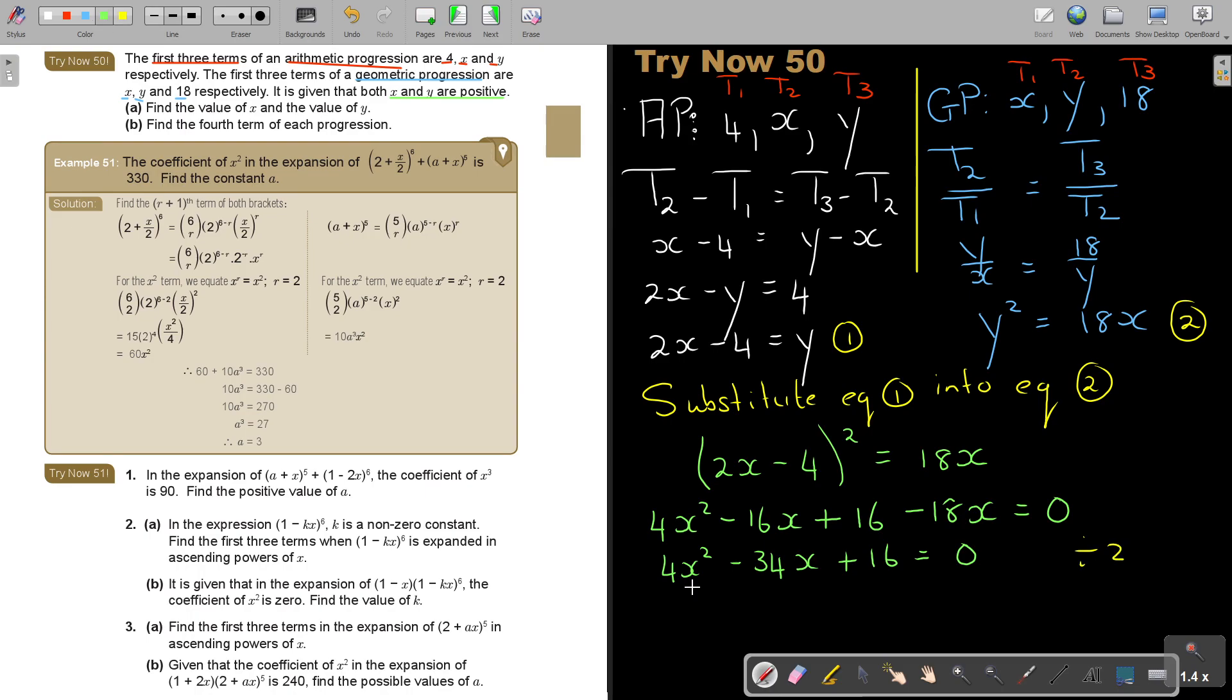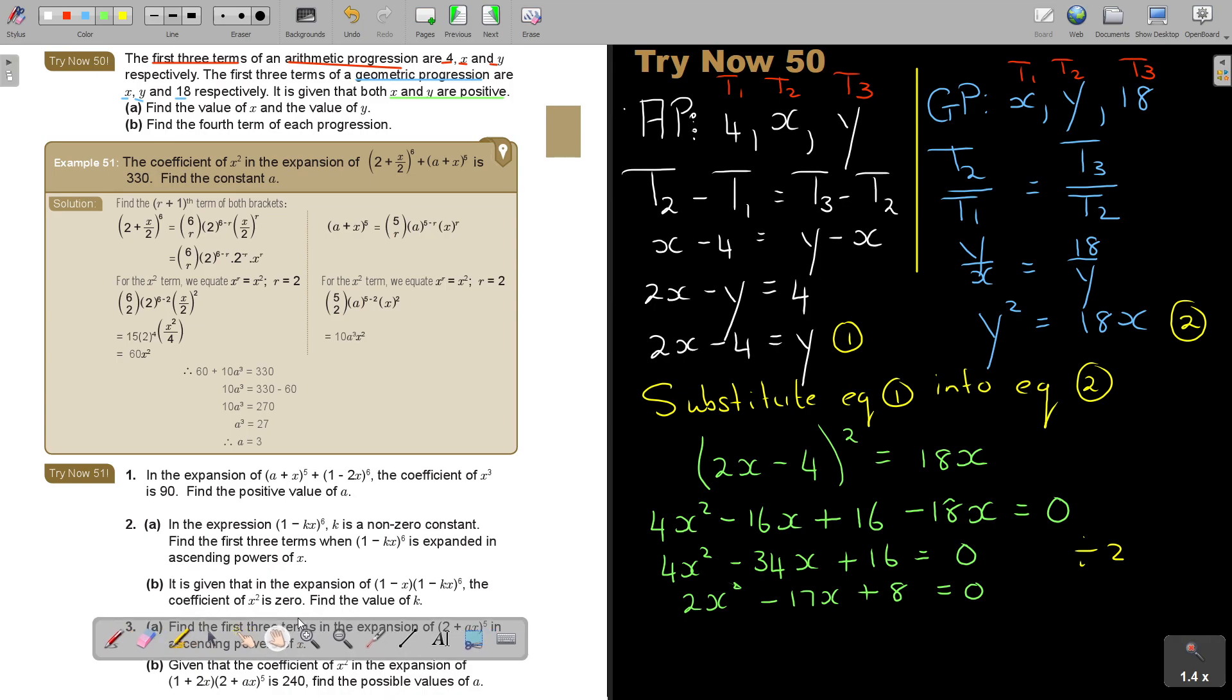So if you divide it by 2, I get 2x squared minus 17x plus 8 equals 0. I'm moving it just up a little bit.